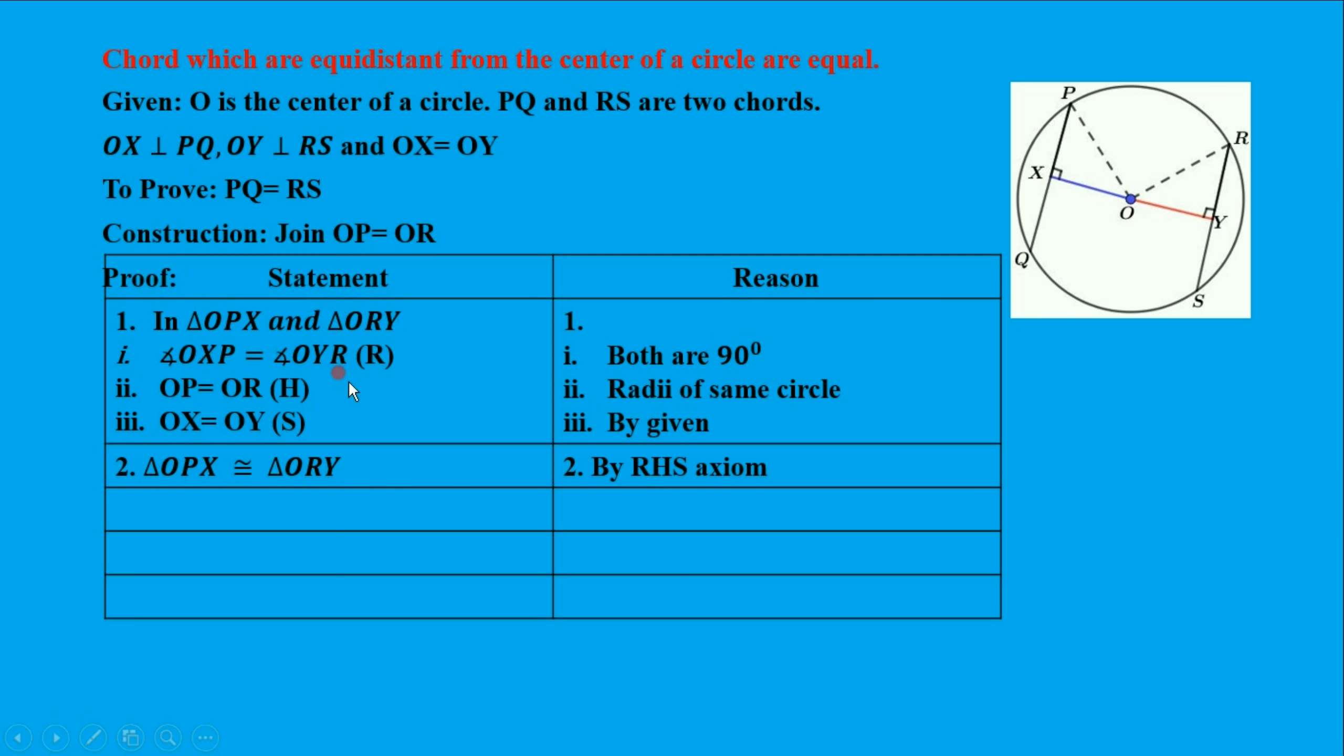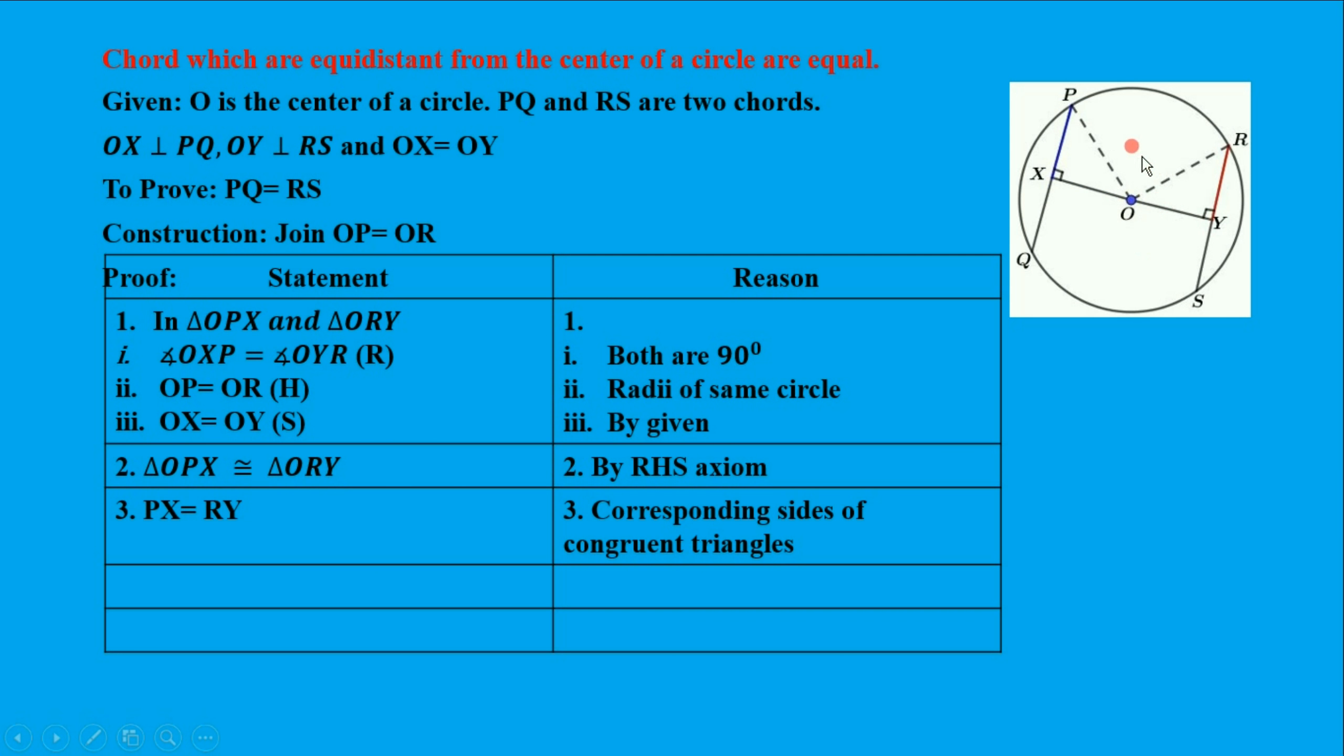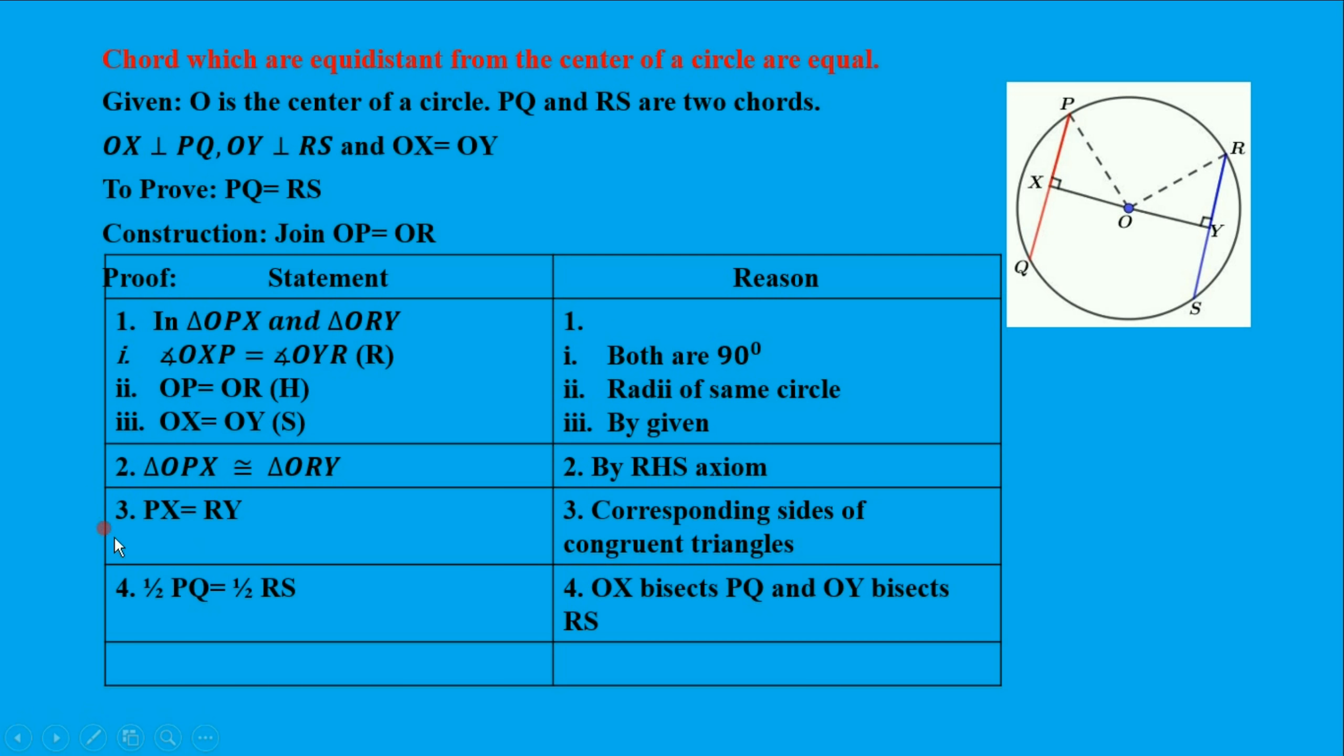If they are congruent, then PX equals RY by corresponding sides of congruent triangles. Fourth point: PX equals half of PQ, and RY equals half of RS.